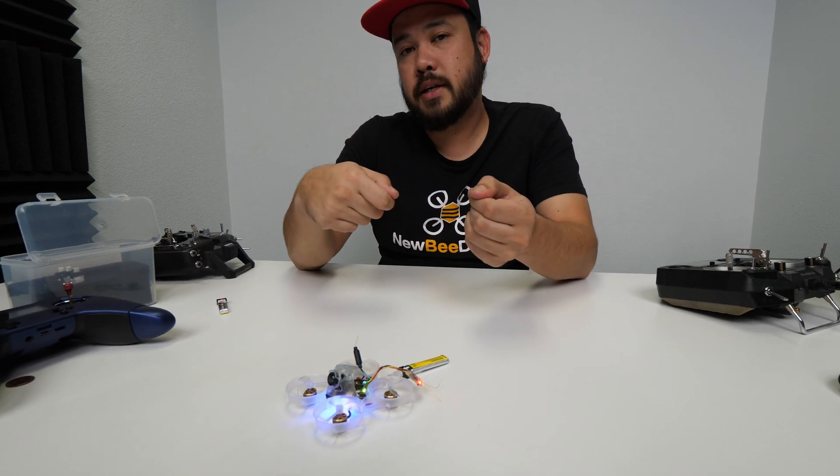So the main issue why a lot of people are having issues here is because a lot of the receivers out there, you hold down the bind button while you power on, and that's how you bind. When for us, all you do is simply apply power and then hit the bind. So that's why some people are changing it from uninverted to inverted. And all you have to do is swap it back and you'll be good to go.